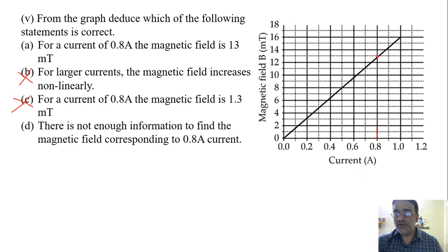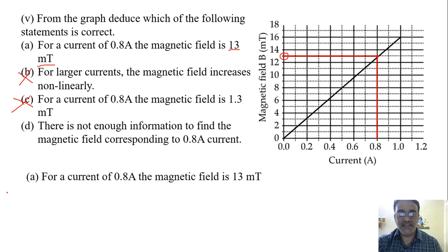See, from 0.8 we will draw one line here. Okay. And from here we draw one line. So this is the magnetic field. So this value is nothing but 13 milli tesla mT. So correct option is A. Any doubt here?